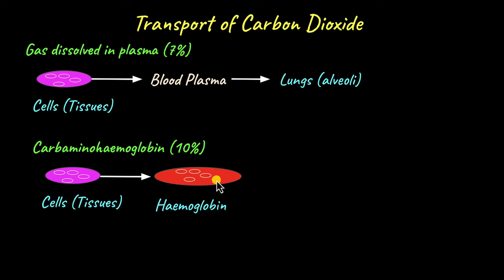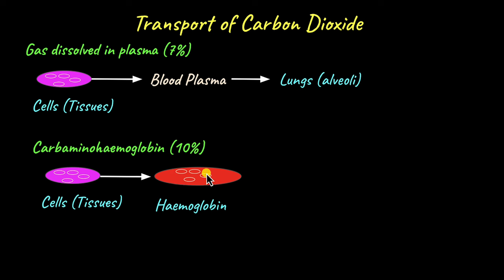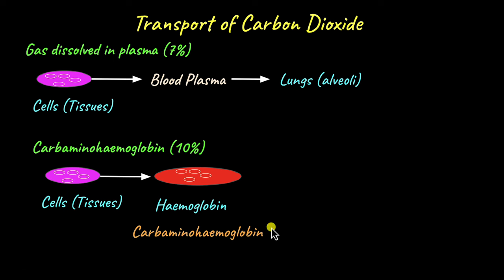This is also useful for the unloading of oxygen in the cells and tissues. Oxygen-containing hemoglobin comes to the cells and tissues, and carbon dioxide enters the red blood cells. The presence of carbon dioxide nudges oxygen to dissociate from hemoglobin, and now carbon dioxide is free to bind with hemoglobin. The site at which carbon dioxide binds to hemoglobin contains an amino group, which is why the structure formed is known as carbaminohemoglobin.